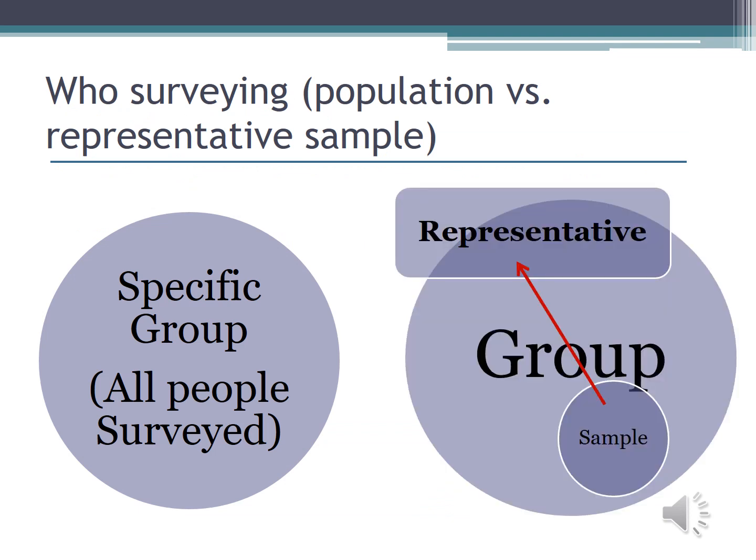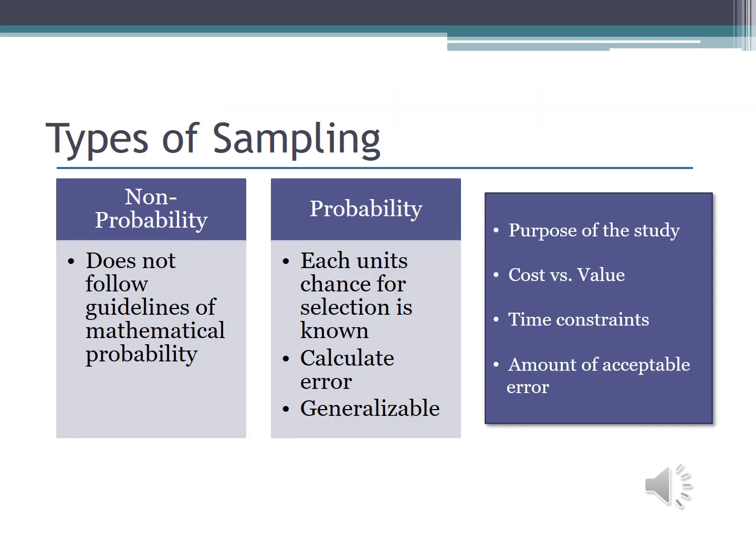Again, you'll need to decide if you are going to go with an entire population or seek a representative sample. Remember, if you have 200 or fewer participants, it's perfectly reasonable and acceptable to survey the entire population. If you choose to sample, you need to decide if you are going to go with non-probability or probability sampling. In non-probability sampling, you don't follow any guidelines of probability that your sample is going to be representative of the overall population.